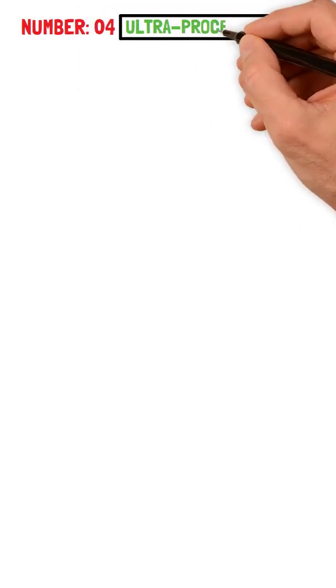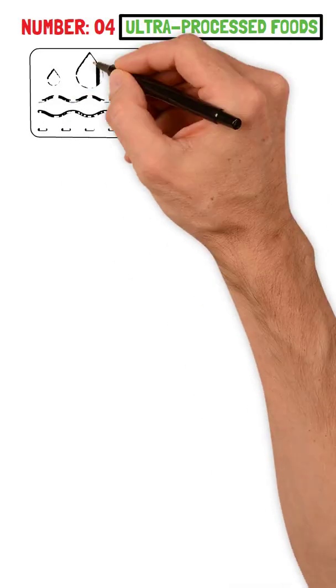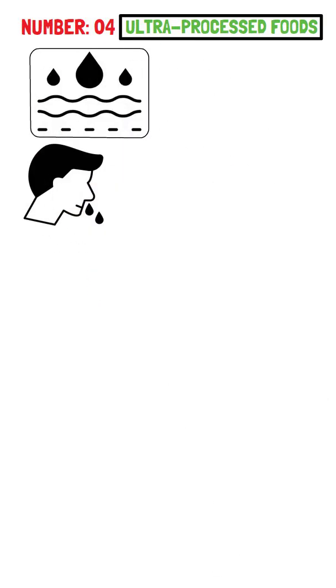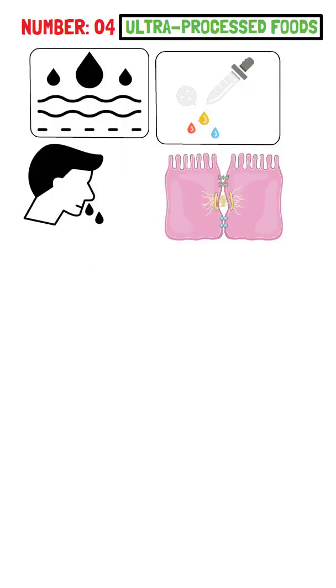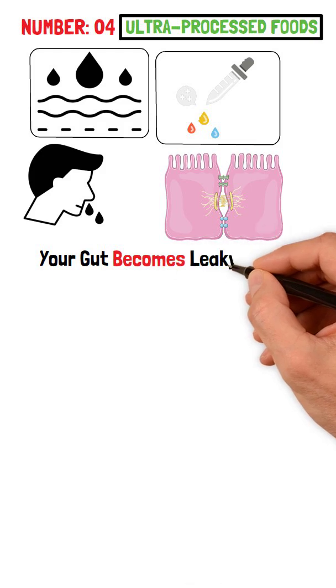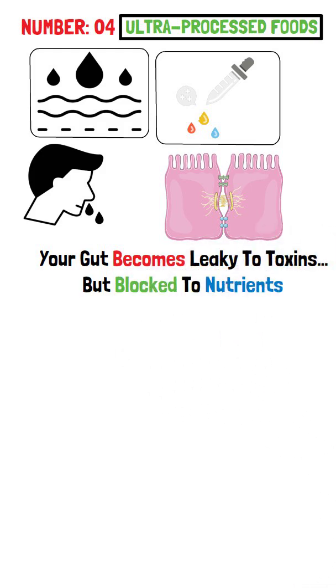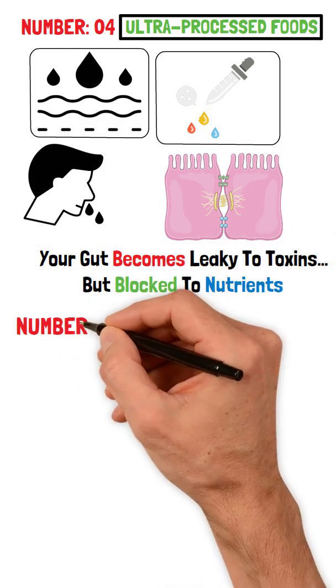Number 4: Ultra-processed foods. Emulsifiers dissolve your mucus barrier. Additives weaken tight junctions. Your gut becomes leaky to toxins, but blocked to nutrients.